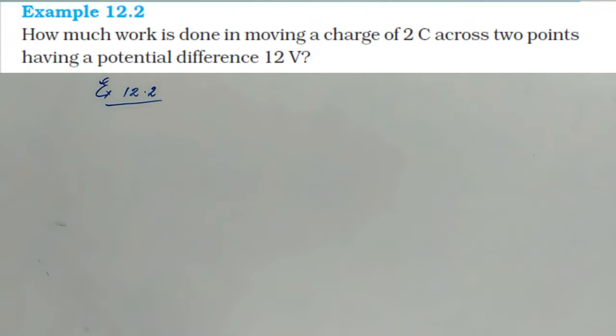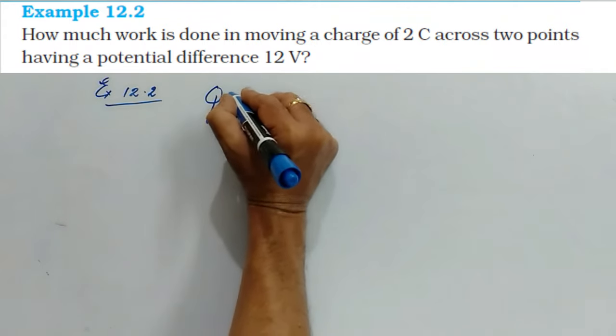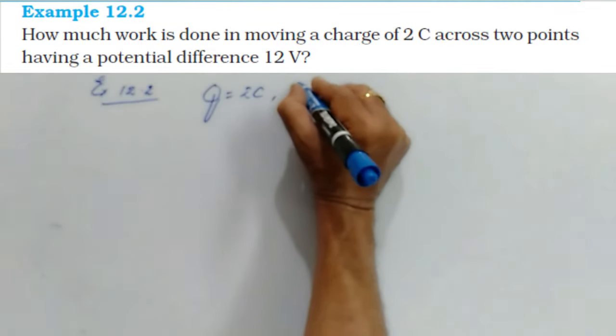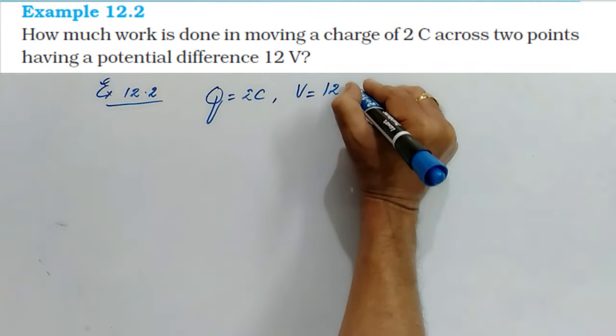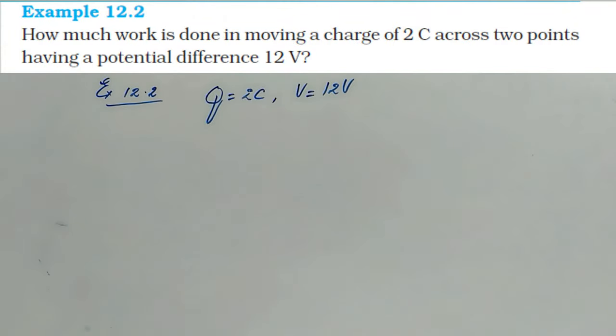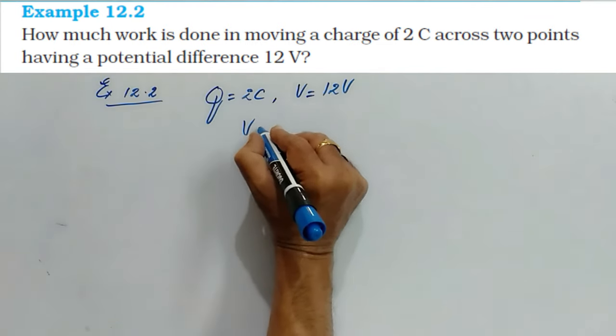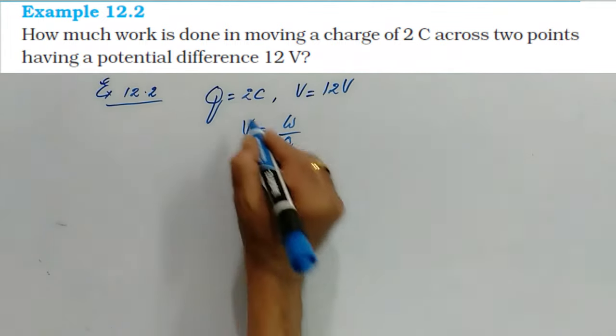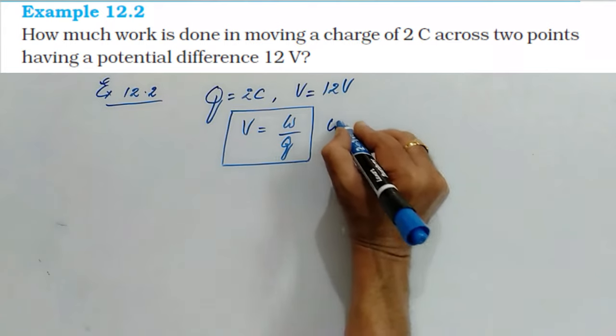In this problem, the work done is asked to move a charge of 2 coulombs. Therefore Q is given as 2 coulombs. The potential difference is given as 12 V. How have we defined the potential difference? It is work done per unit charge. Therefore, potential is equal to work done by charge. This is the formula to be used so that we can calculate the work done.